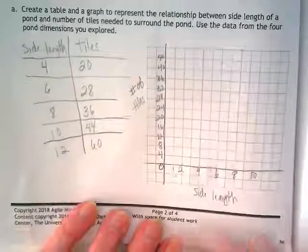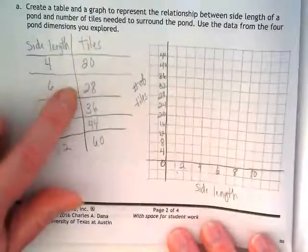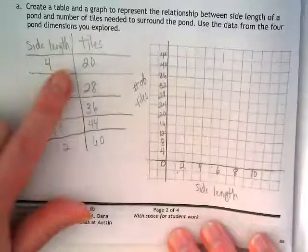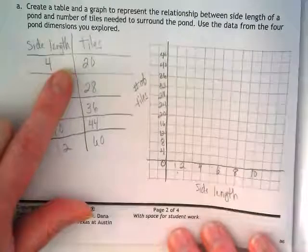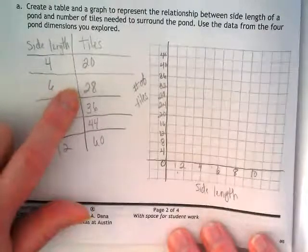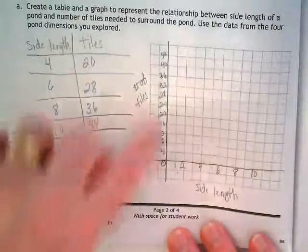Because I'm noticing when I look at the number of tiles that all of these have 4 as a factor, right? 4 times 5 is 20 and 4 times 7, so that's why I chose 4 to go up.